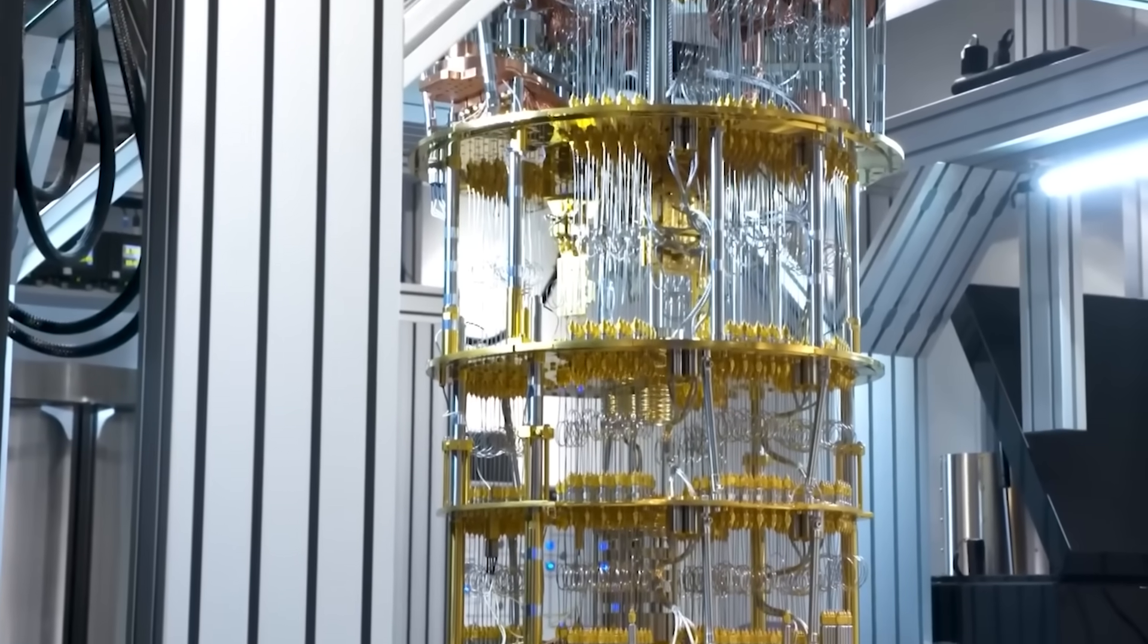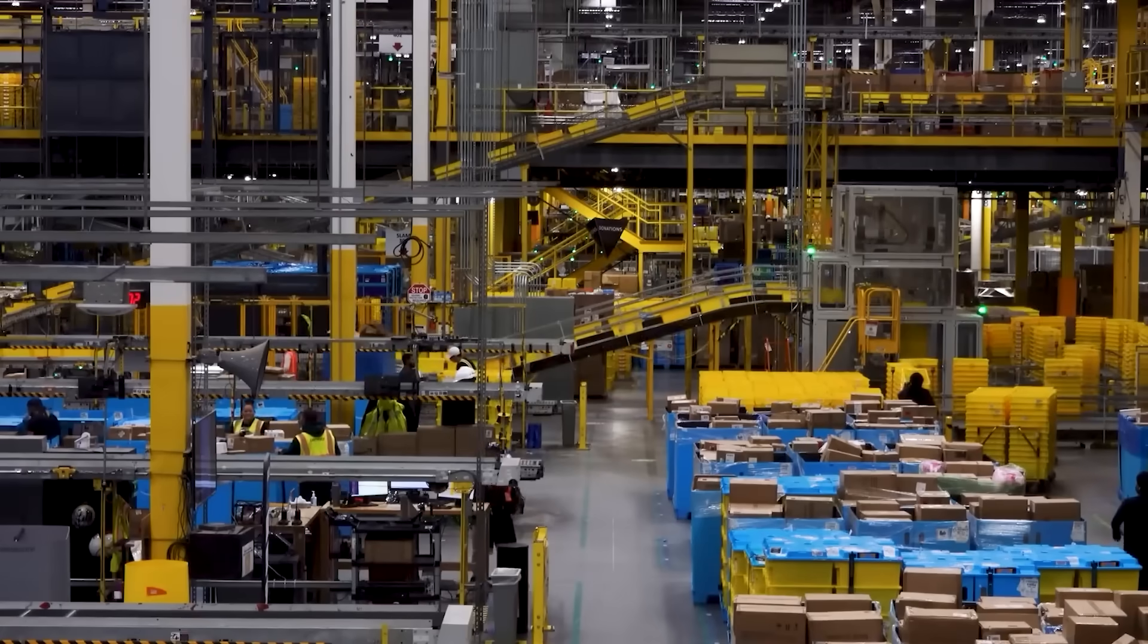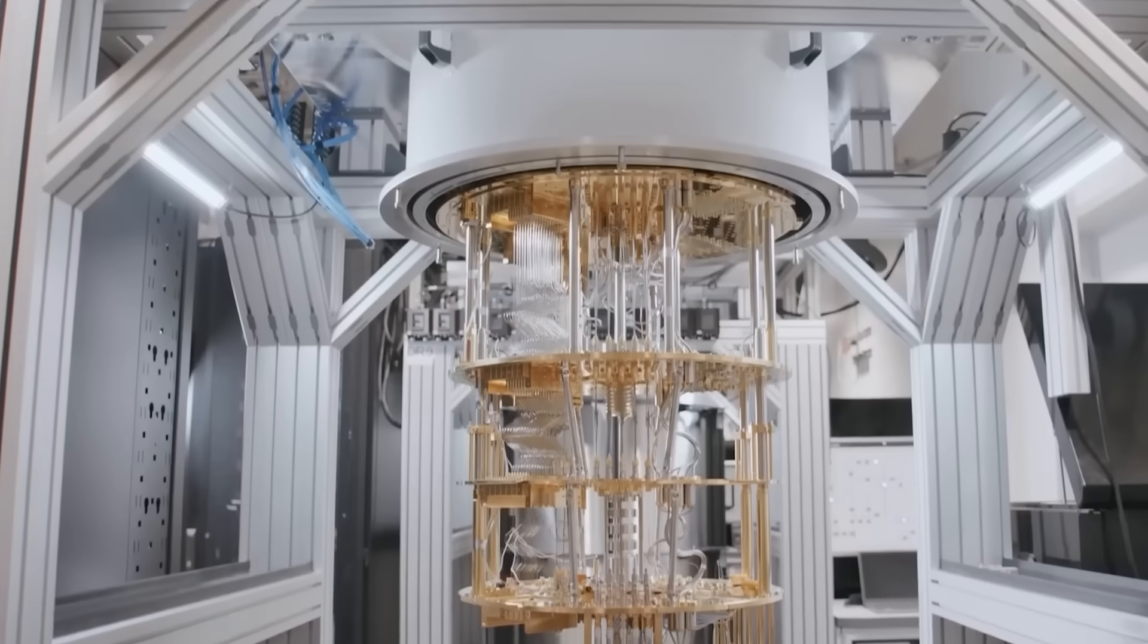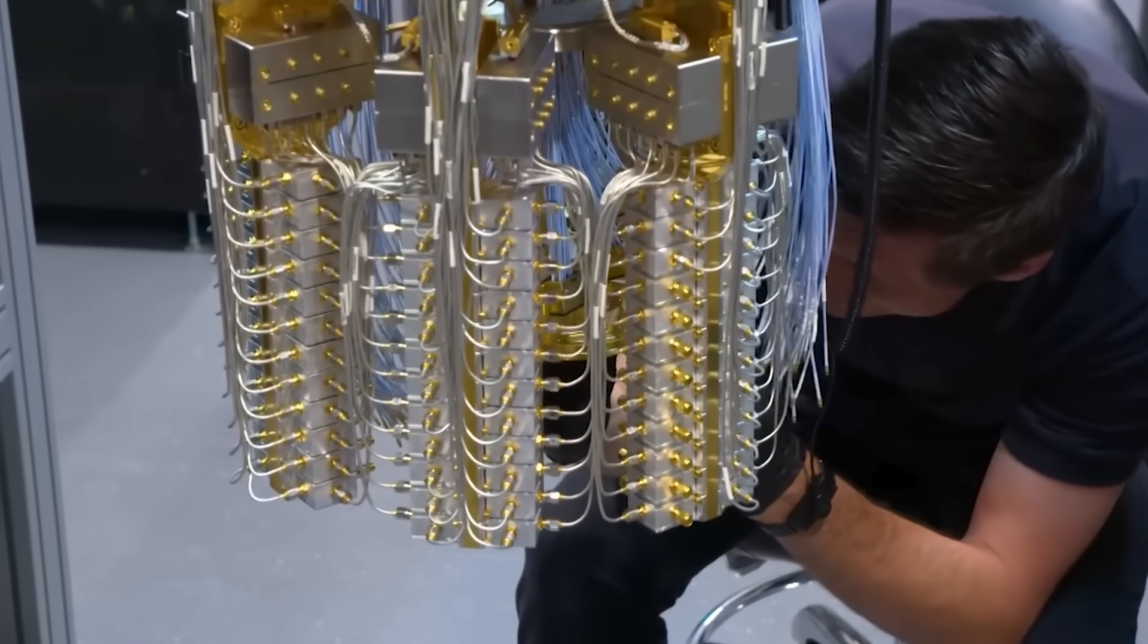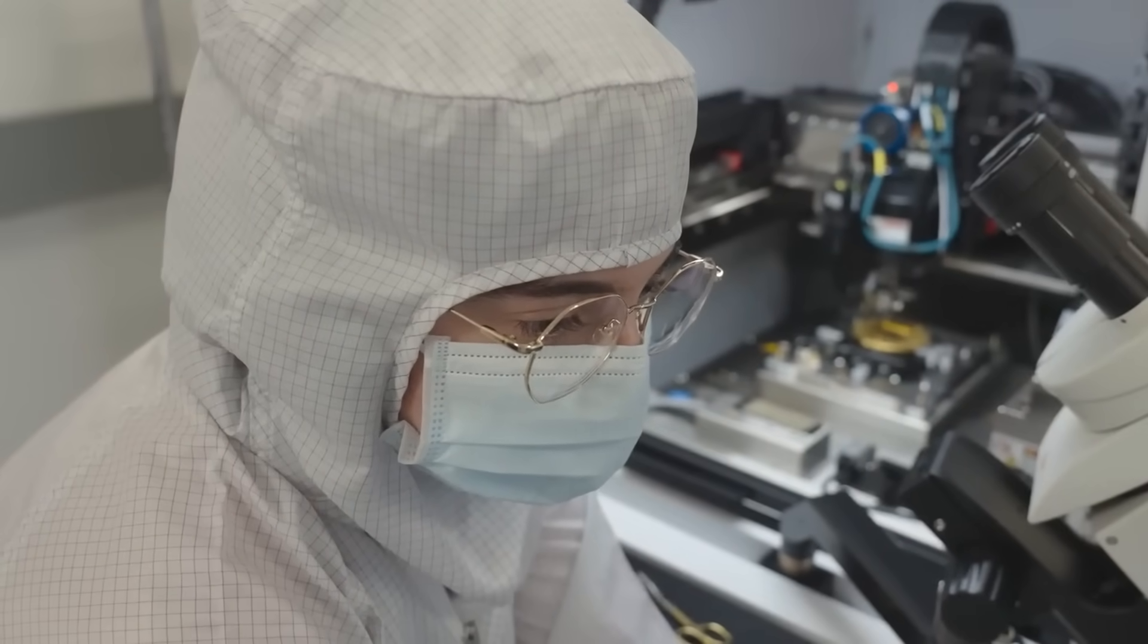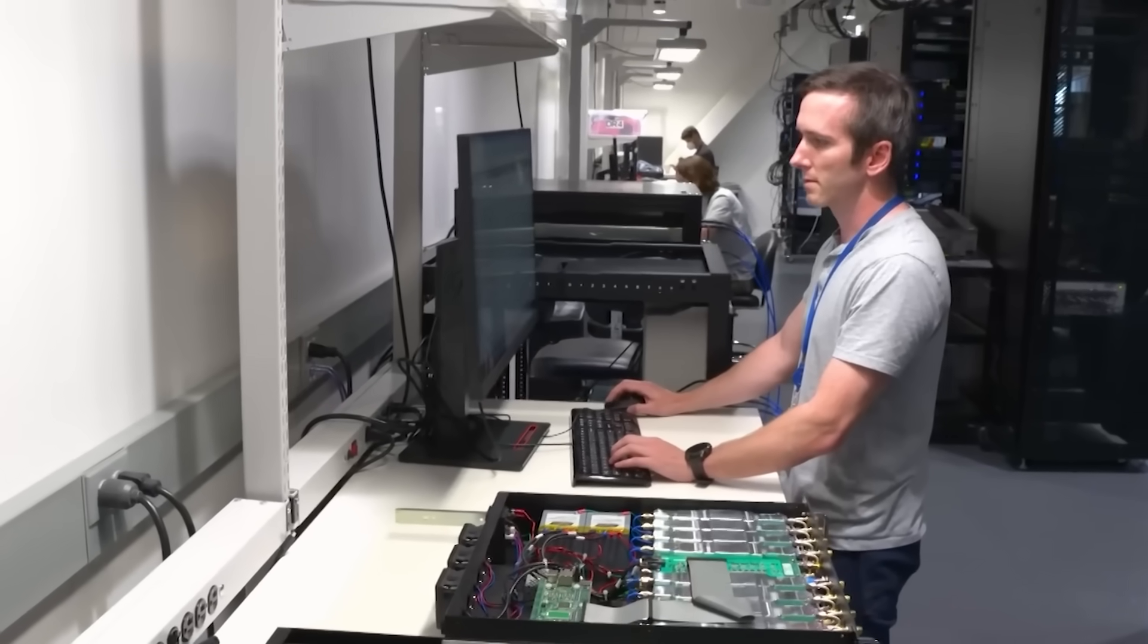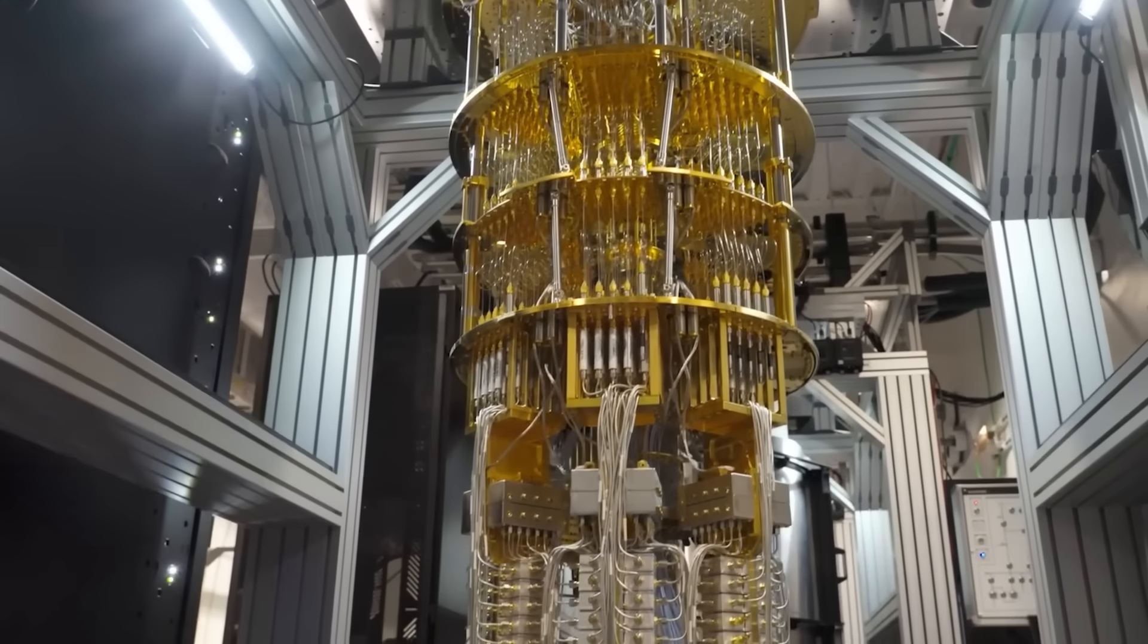IBM calls this the quantum-centric supercomputer, combining quantum processors with AI and HPC systems under one architecture. Microsoft's Azure Quantum and Google Cloud's hybrid frameworks already let developers run quantum and classical tasks in parallel. These setups are what scientists call co-processing, where both systems share the workload. The end goal isn't competition, but cooperation. Quantum computers will act like specialized teammates, tackling the impossible calculations, while classical ones handle the rest. Together, they'll unlock solutions we couldn't even model before.